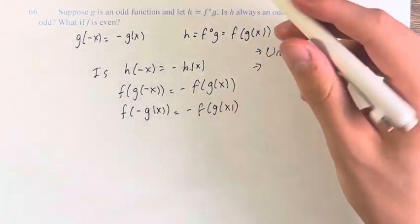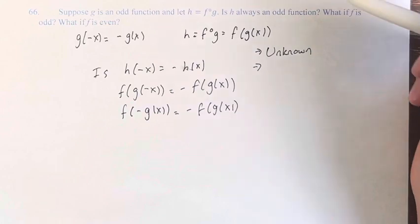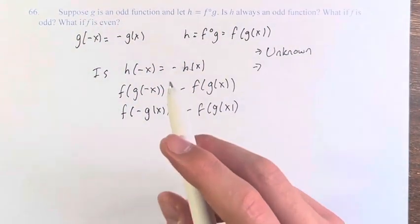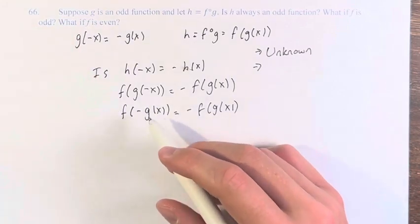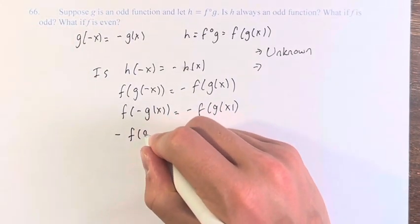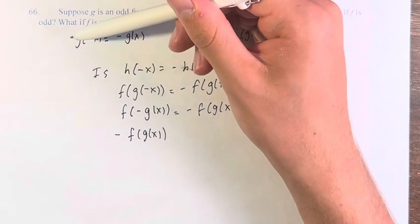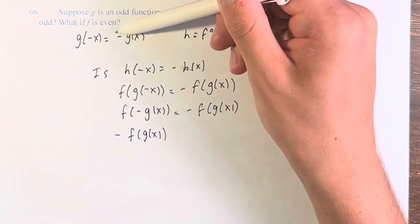If f is odd, then f of negative g of x is equal to negative f of g of x. You take out the negative in a way. Move it out front.